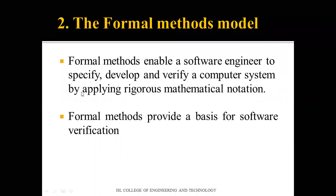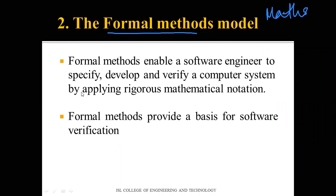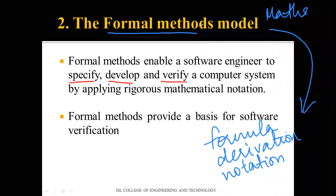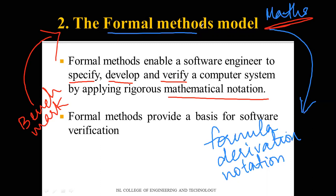The second type of model is the formal methods model. By the name, 'formal' means this is based on mathematics — any involvement of mathematical formulas, derivations, or notations. This model enables a software engineer to specify, develop, and verify a computer system by applying rigorous mathematical notation. For example, benchmark testing for phones uses mathematical formulas to give precise values for specifying and verifying software features.